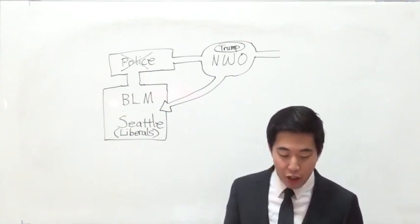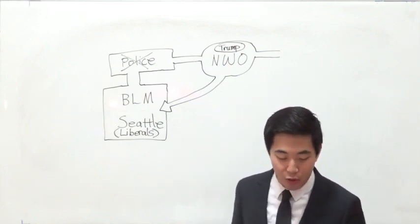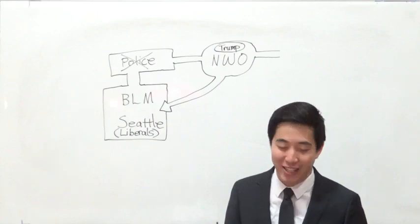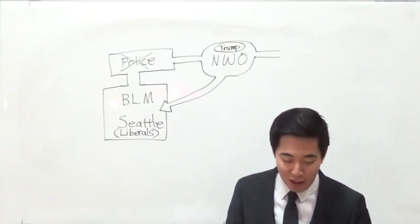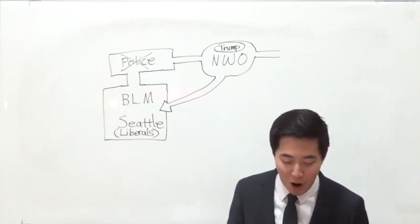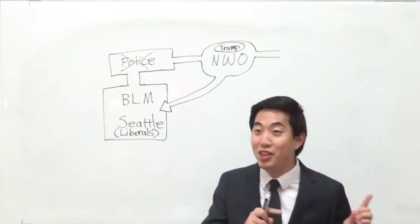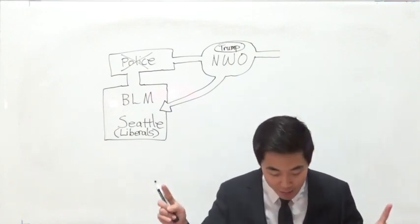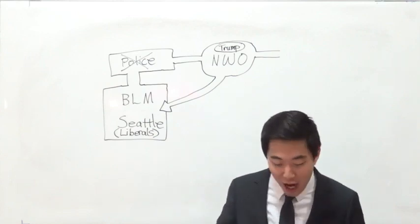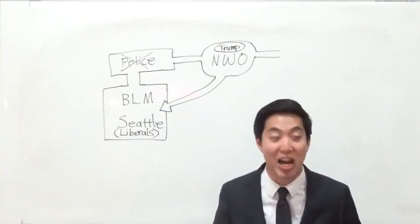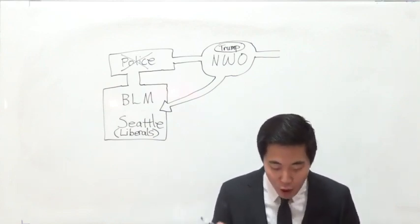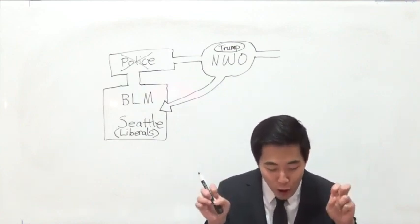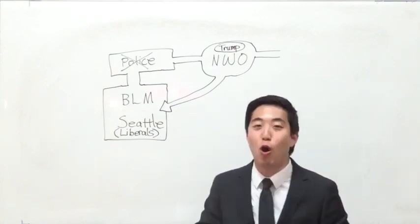The following day, a coalition of black activists associated with the autonomous zone released a more specific list of demands, including, look at this, the ridiculousness, including the total abolition of the Seattle Police Department. Look at the, this is ridiculous, their list here, okay? Total abolition of the Seattle Police Department. The retrial of all racial minorities serving prison time for violent crimes. And the replacement of the police with autonomous, restorative, transformative accountability programs.